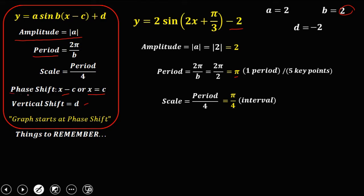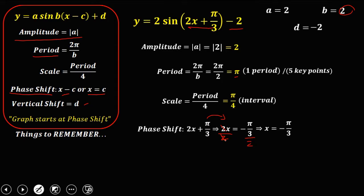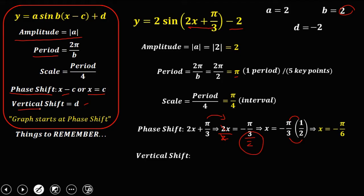To solve for the phase shift, we have 2x plus π over 3. To solve for x, transpose π over 3 so it becomes negative. Then divide by 2 — take the reciprocal of 2, that's 1 over 2, and multiply. So x equals negative π over 6. The phase shift is x equals negative π over 6.